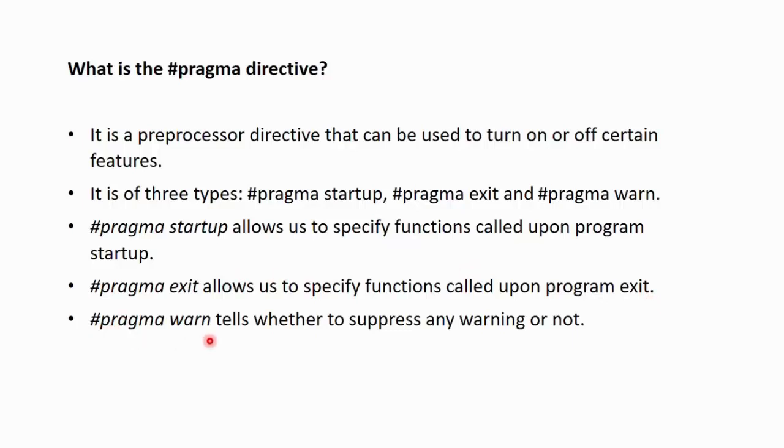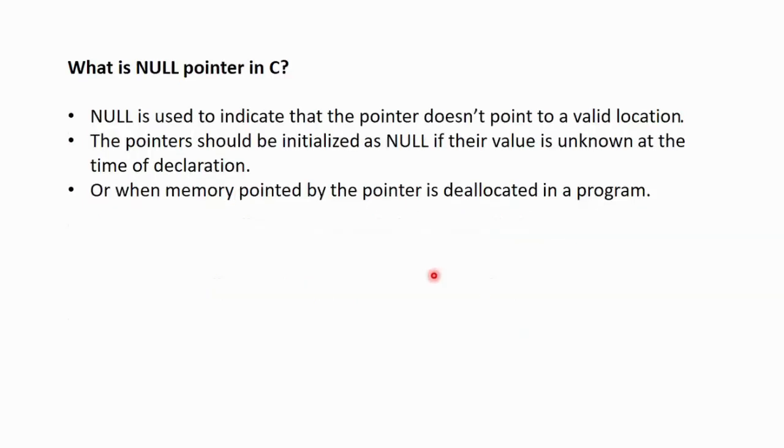#pragma warn tells whether to suppress any warning in the C program or not. Next question is, what is null pointer in C? Null is used to indicate that the pointer doesn't point to a valid location. The pointer should be initialized as null if their value is unknown at the time of declaration or when the memory pointed by the pointer is deallocated within a program.